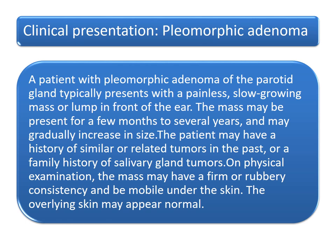The most common benign tumour of the parotid gland is pleomorphic adenoma. Its clinical presentation is usually a painless, slow-growing mass or lump in front of the ear. The mass may be present for a few months to several years and may gradually increase in size. The patient may have a history of similar tumours in the past or a family history of salivary gland tumours. On physical examination, the mass may have a firm or rubbery consistency and may be mobile under the skin.